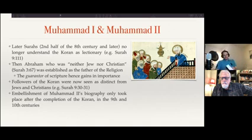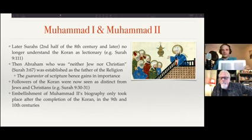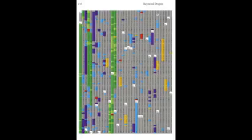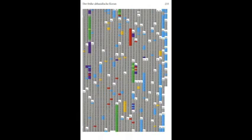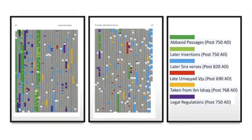Let me show you something I'm reading right now — this is what Raymond de Kerr did. What's depicted here is a list of all verses in the Quran, and Raymond de Kerr has color-coded as many as he could. There's still a lot of gray where he can't date it, but the other colors each correspond to a certain period. Red are Umayyad texts, green are pre-Umayyad texts with different shades for earlier and later, purple are legal codes, and blue and yellow come from other sources. This is his attempt at dating the Quran verses differently than before.